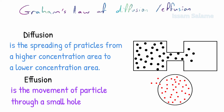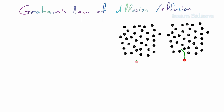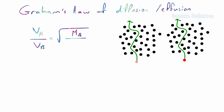The terms diffusion and effusion are interchangeable and both are related to the speed of particles. According to Graham's Law of Diffusion, the speed of diffusion of gas particles is inversely proportional to the square root of the gas's molar mass. To compare the rates of diffusion of two gases, the rate of diffusion of gas A divided by the rate of gas B equals the square root of the molar mass of gas B divided by the molar mass of gas A.